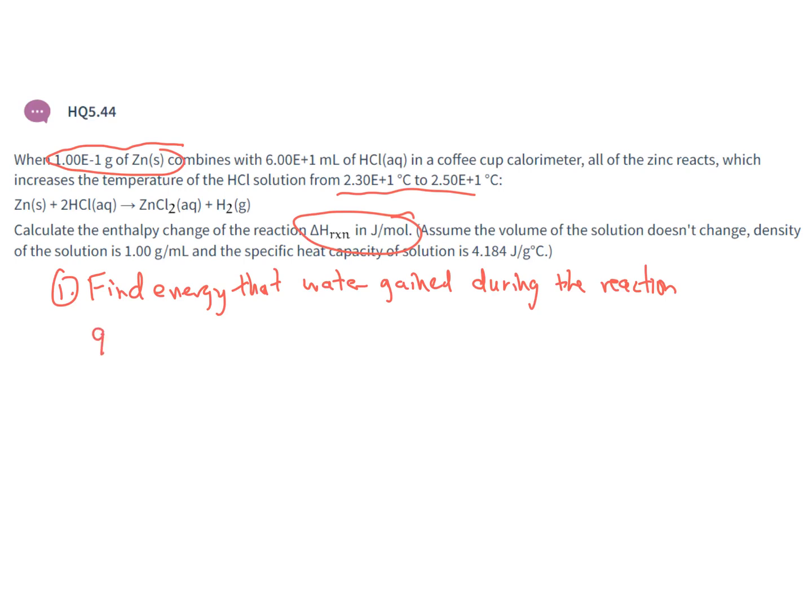For the first calculation we need Q equals MC delta T. So Q is my energy that I'm looking for. My mass, well I've got 60 milliliters of HCl, that has a density very close to water, one gram per milliliter. I know for every one milliliter of water I need one gram.